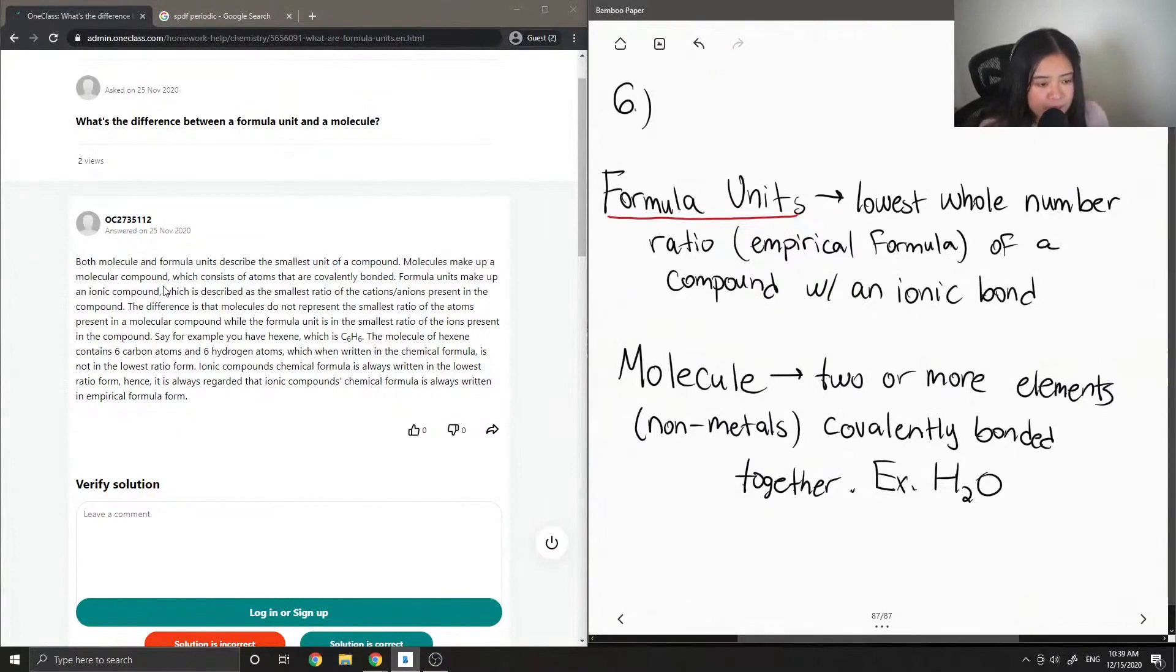So an example of formula units is NaCl. It's already in the lowest whole number ratio.